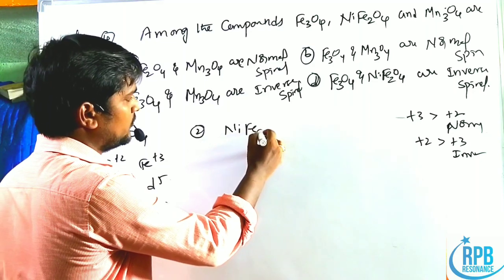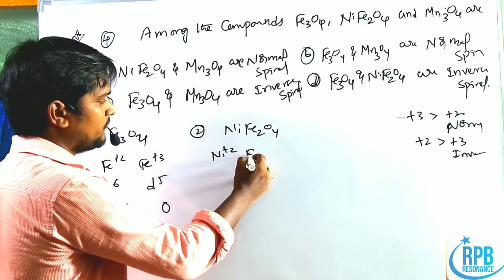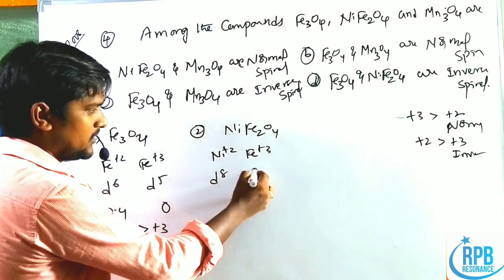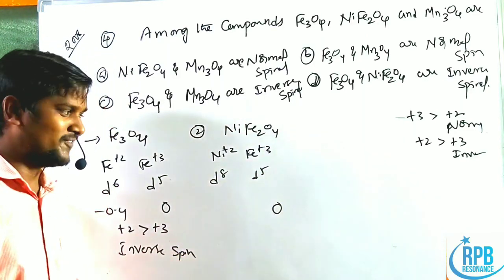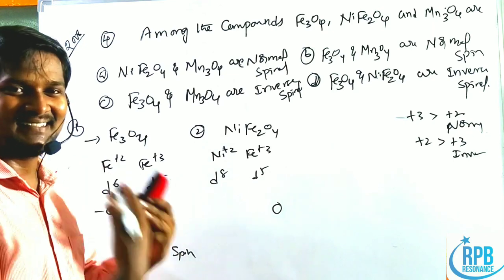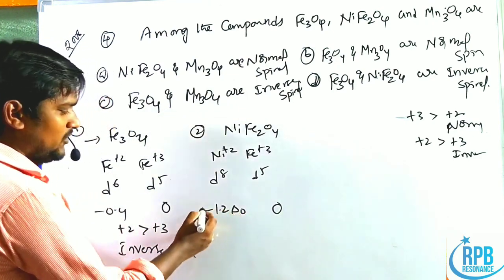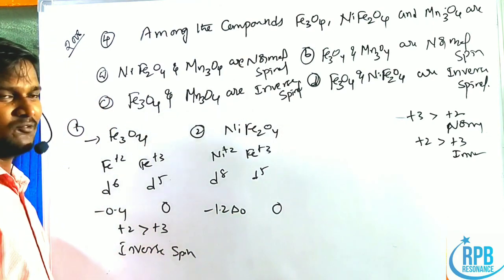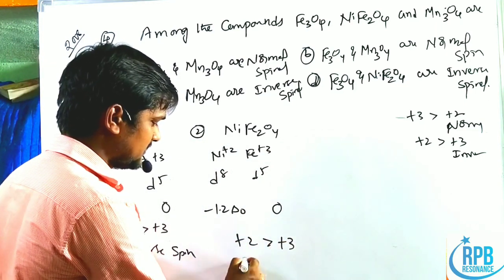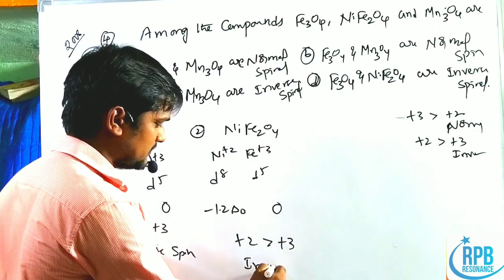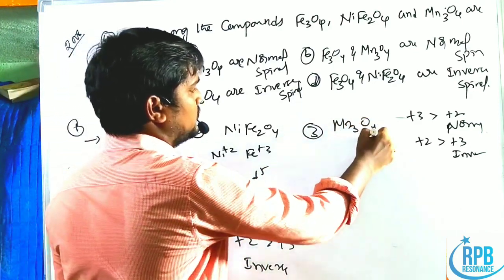NiFe₂O₄ contains Ni²⁺ (d⁸, CFSE = −1.2 ΔO) and Fe³⁺ (d⁵, CFSE = 0). Since A²⁺ CFSE (−1.2 ΔO) > B³⁺ CFSE (0), NiFe₂O₄ is also an inverse spinal.